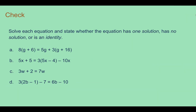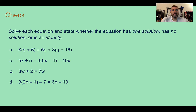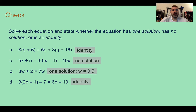Check your understanding of one solution, no solution, or identities. Solve each equation and determine how many solutions it has. The first one is an identity. The second one has no solution. The third one has one solution, which is 0.5 or one-half. And the last one is also an identity.